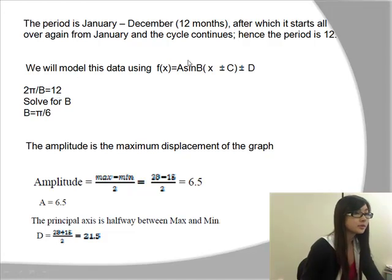So we already know that the period is 12, and we learned before that in order to write B, we have to write out 2π/B = 12, the period. And then we solve for B. So in this case, B will equal π/6.